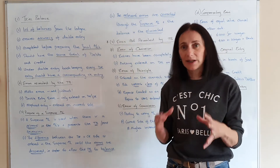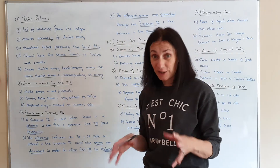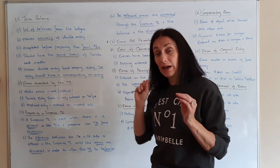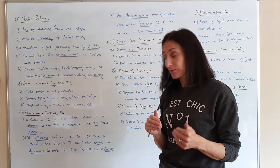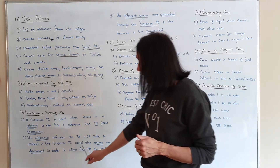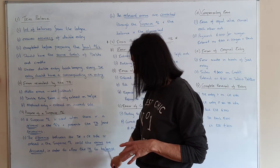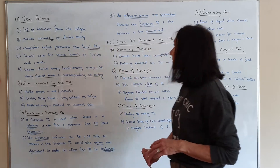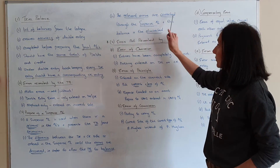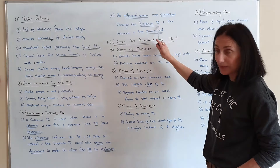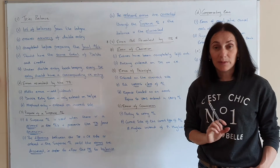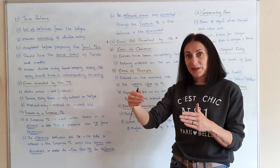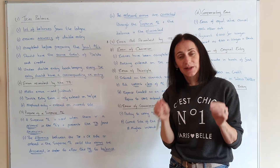You will not leave the suspense account there indefinitely. You're just doing it so you can prepare the final accounts, then you remove it once the errors have been discovered. The errors are then corrected through the suspense and the balance is eliminated. As you fix your mistakes, you slowly get rid of the balance in suspense and it disappears because the mistakes have been found.